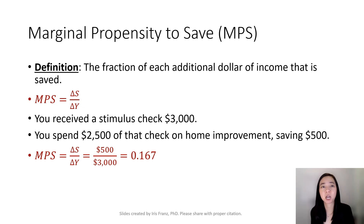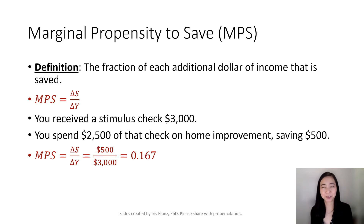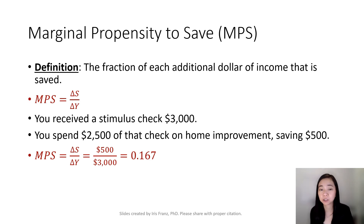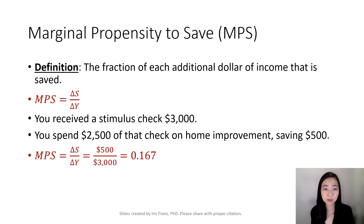Next, we're going to talk about the marginal propensity to save, also known as MPS. By definition, marginal propensity to save equals the change in saving divided by the change in income. Continuing with our earlier example: you receive a $3,000 stimulus check, spend $2,500 on home improvement, and save $500. Your MPS equals $500 divided by $3,000, which gives you 0.167.